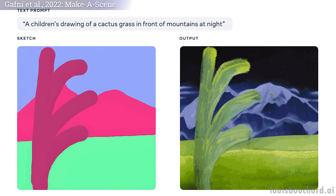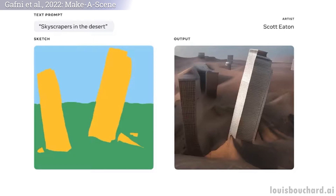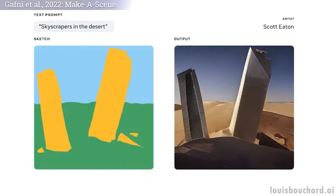Instead, Meta wanted to push creative expression forward, merging this text-to-image trend with previous sketch-to-image models, leading to Make a Scene — a fantastic blend between text and sketch-conditioned image generation. This simply means that using this new approach, you can quickly sketch out a cat and write what kind of image you would like, and the image generation process will follow both the sketch and the guidance of your text.